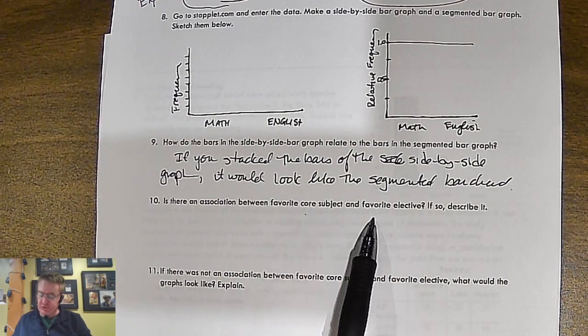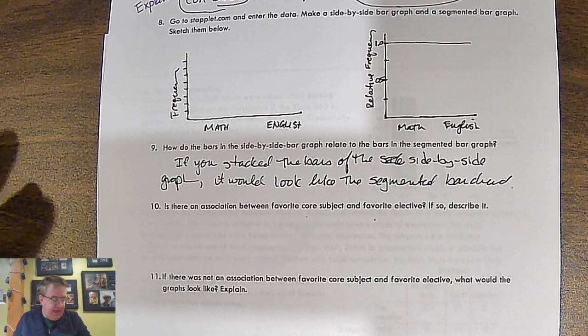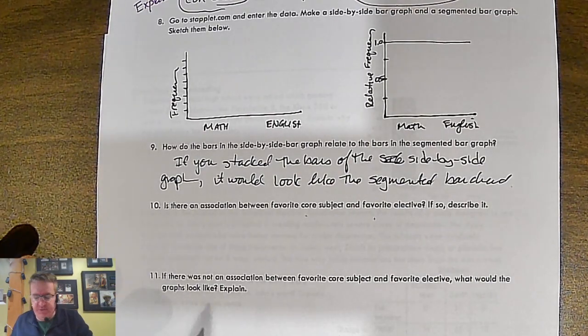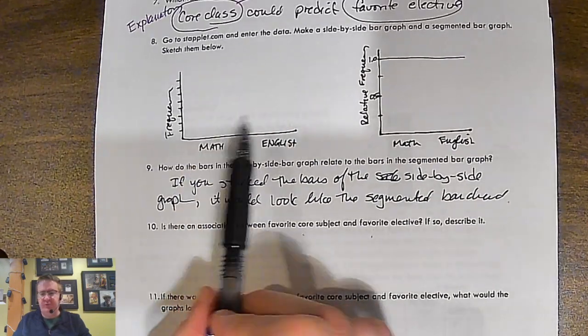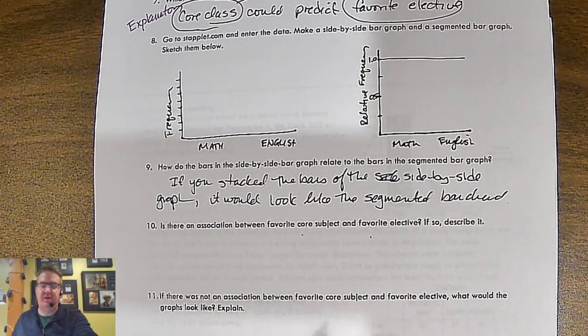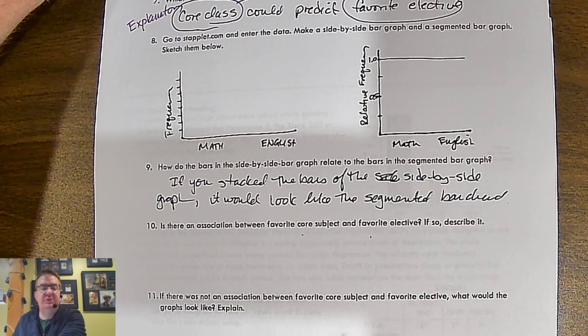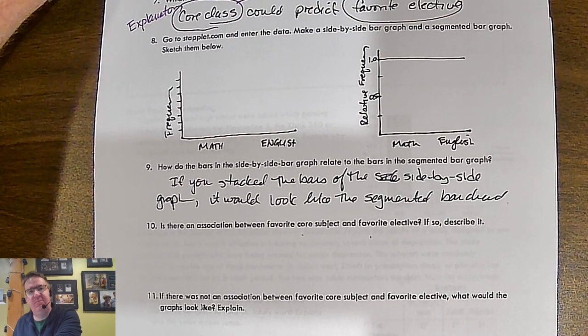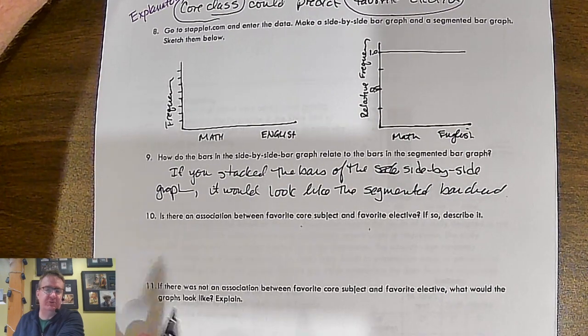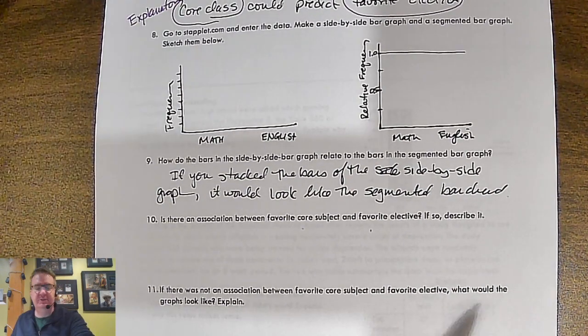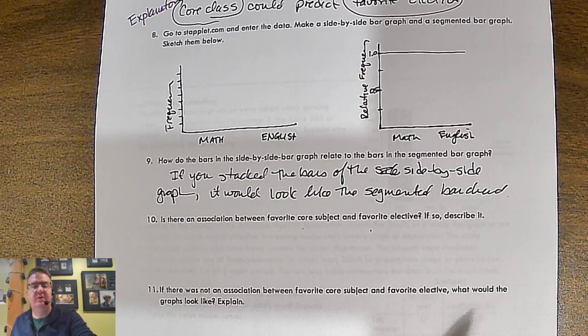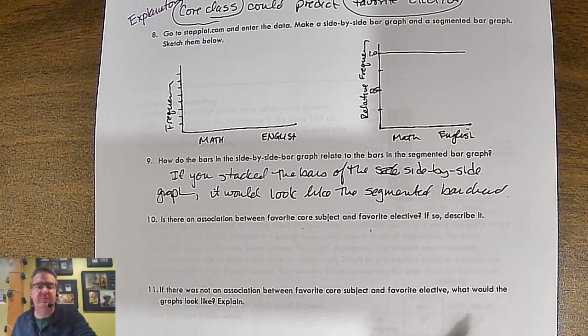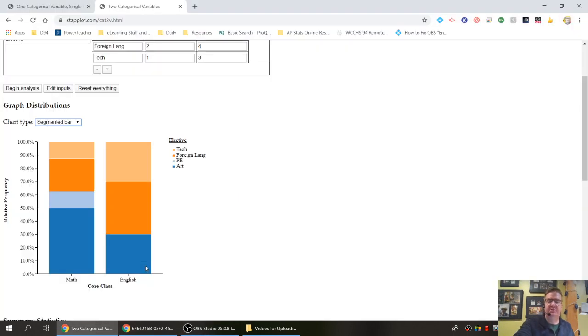Is there an association between favorite course subject and favorite elective? Describe it. You've got two different possible answers here. If your two graphs here, so if these two graphs look the same, or these two graphs look the same, then you would say no. Not really. You get the same results regardless if you pick English, if the student said English or the student said math. In our case, since these don't look the same, I went back over to the stem plot for you. So since these two bars don't look the same, we would say, yeah, there could be some sort of association there.